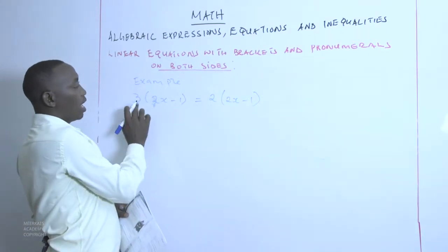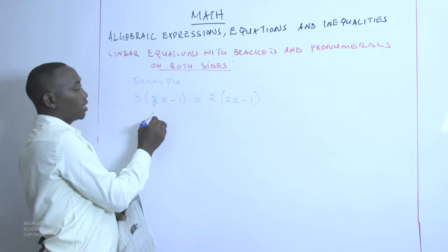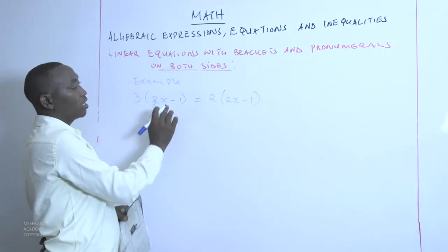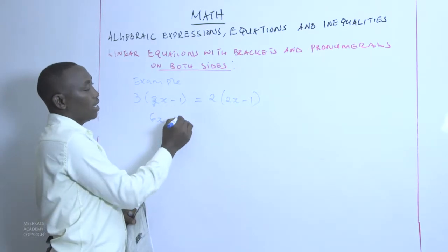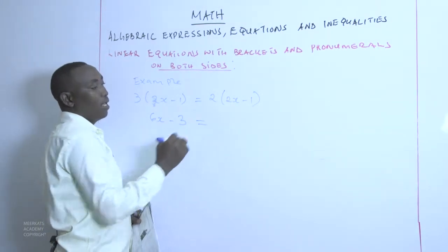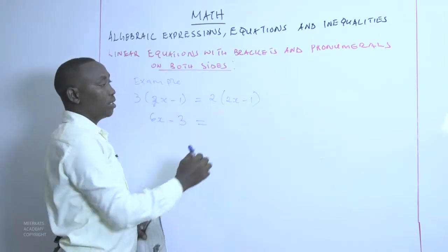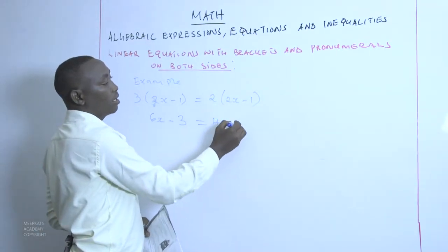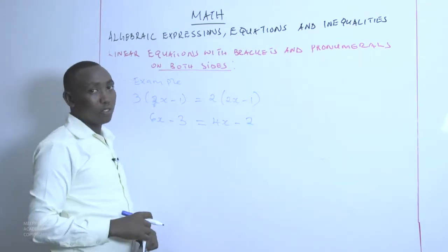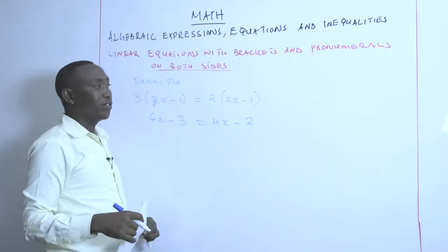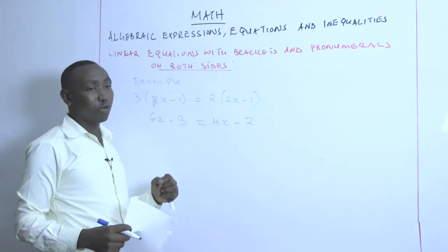When we expand the left side, we get 3 multiplied by 2X, which gives us 6X, subtract 3 multiplied by 1 which is minus 3, equals 2 multiplied by 2X which gives us 4X, subtract 2 multiplied by 1 which gives us 2. That is the first step in solving such a problem — we expand or open up the brackets.